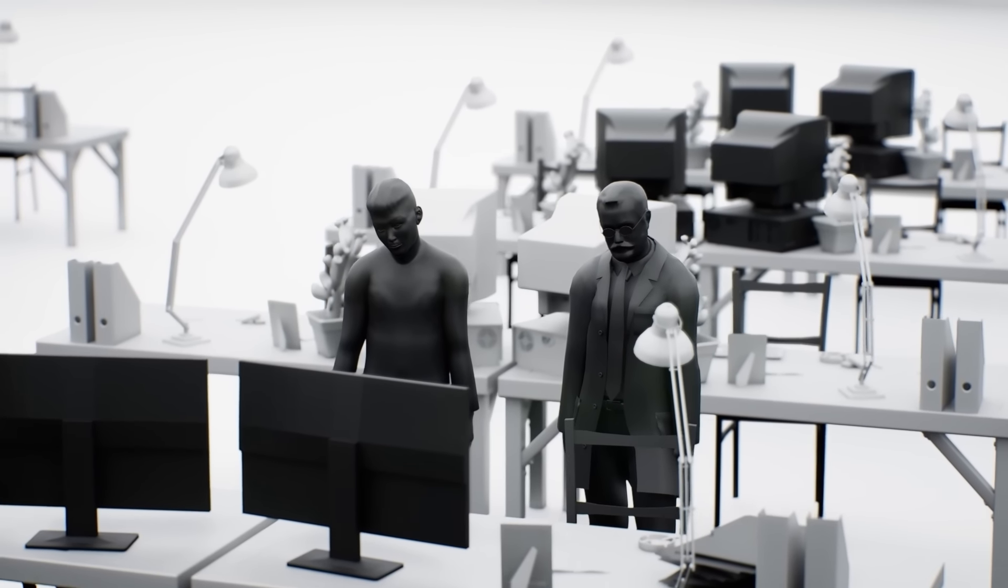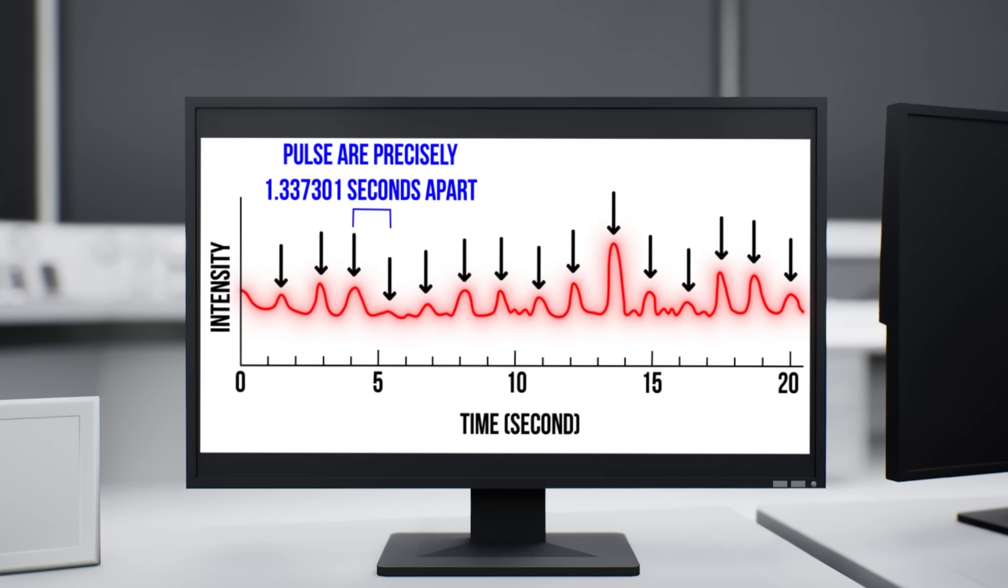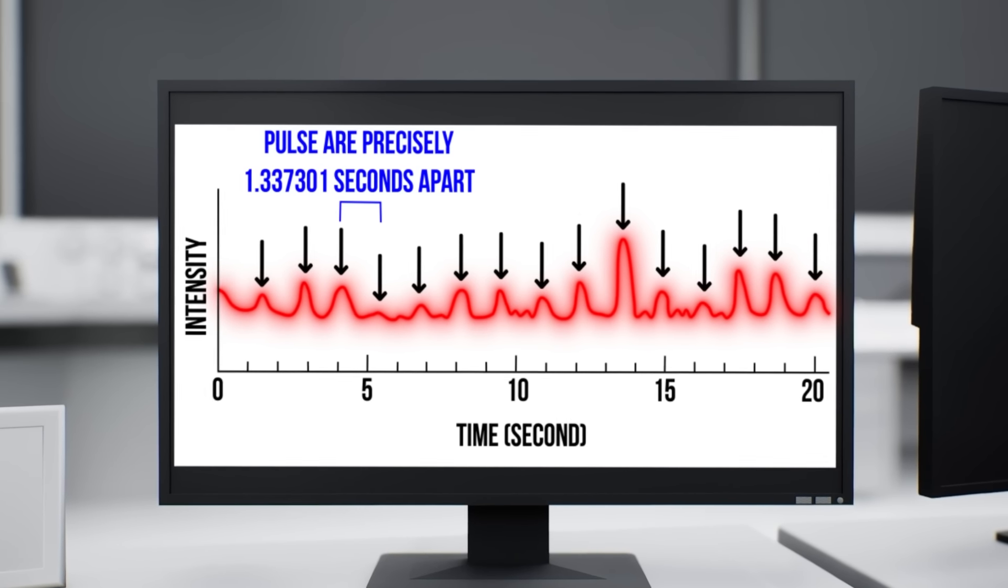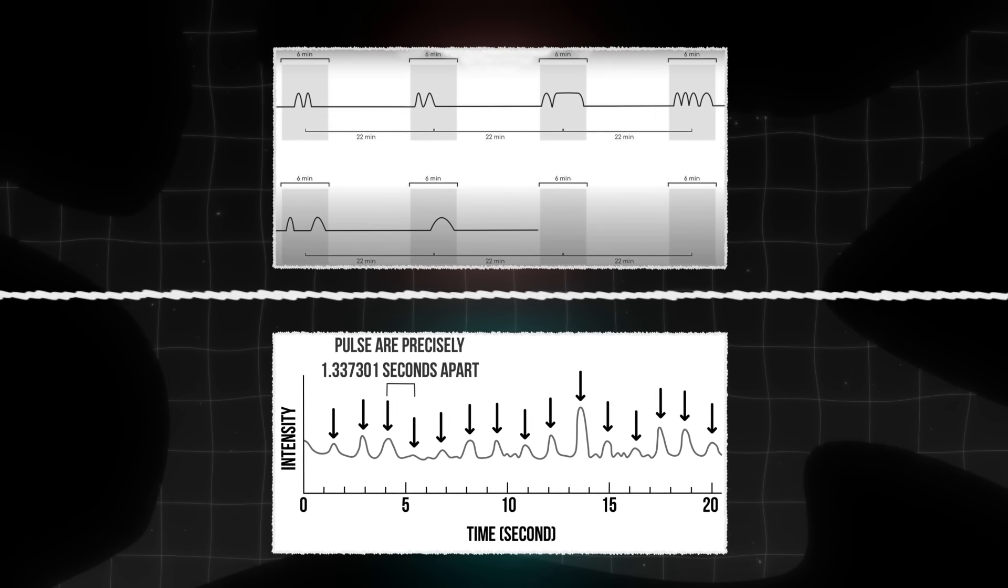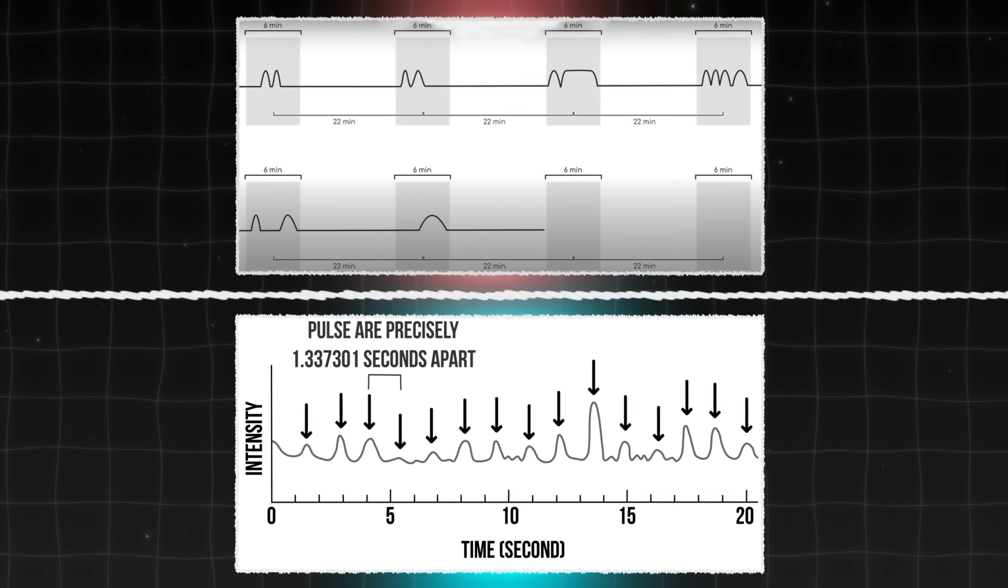Cuando los científicos observan un pulsar, esperan ver ráfagas de intensidad similar en un lapso inferior o ligeramente superior a un minuto. La misteriosa señal no solo es demasiado larga para un pulsar, sino que también es irregular. Es simplemente una tontería.